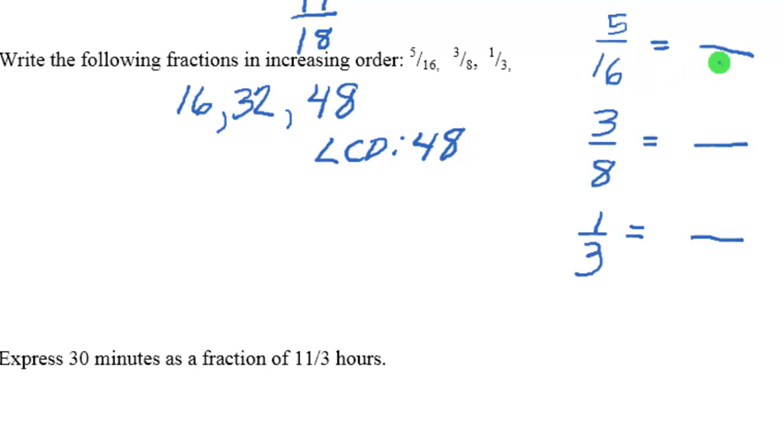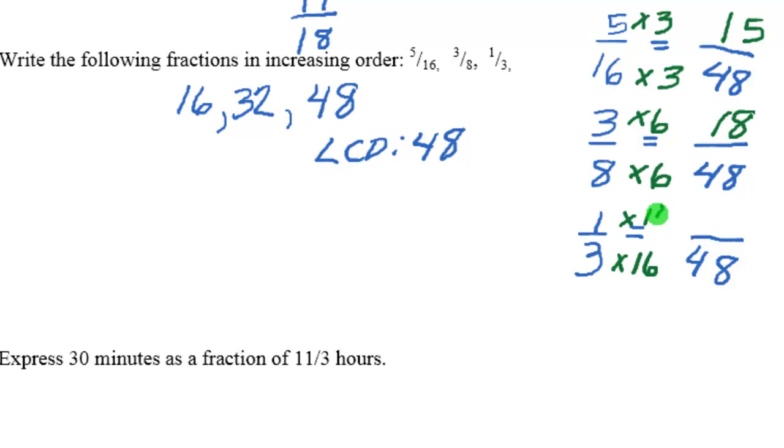We're going to change all of these to 48. 16 got multiplied times 3 to get 48, so it was the third entry in our table. We have to do that to the top, to the numerator, so this is 15. Then 8 times 6 is 48, so we have to do that to the top. 3 times 6 is 18. And then 3 times 16 is 48, and we do that to the top. 1 times 16 is 16.